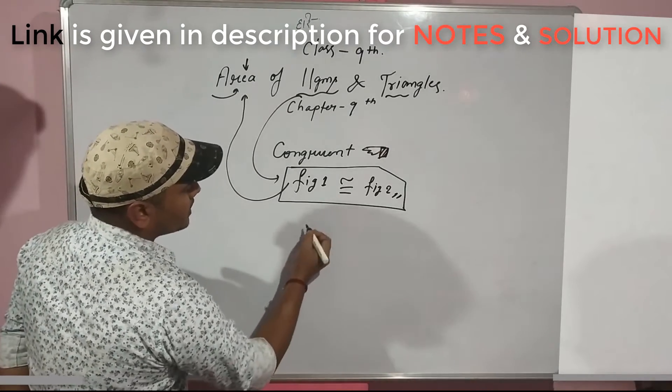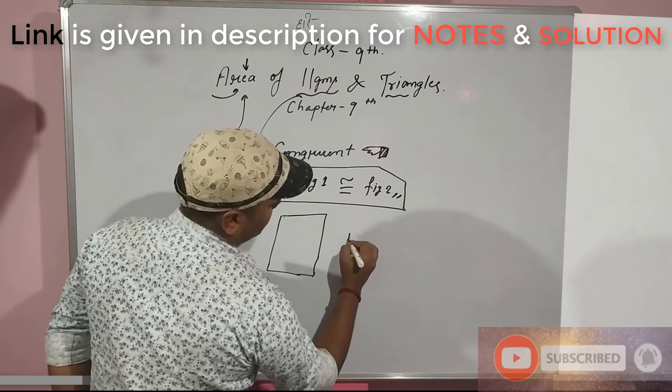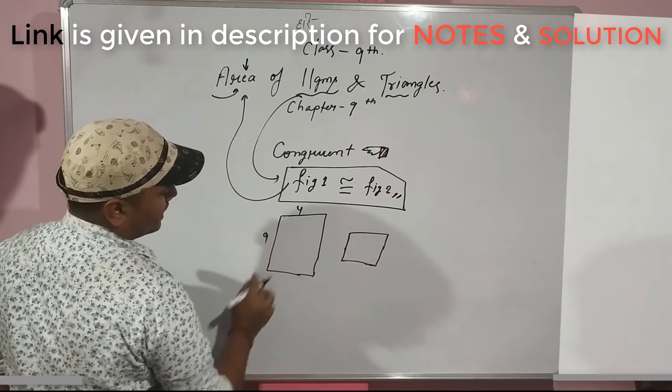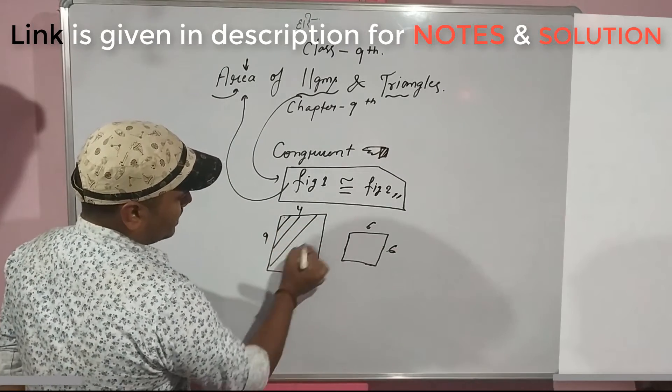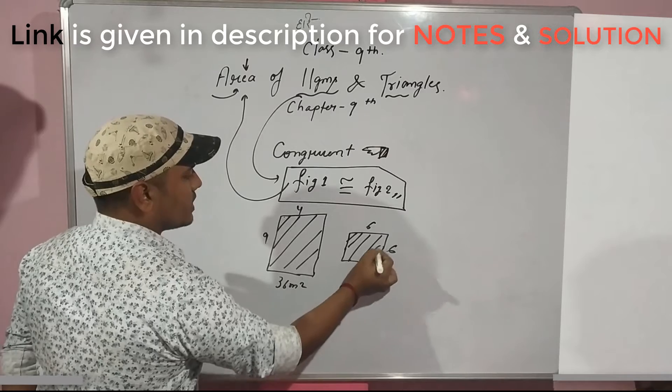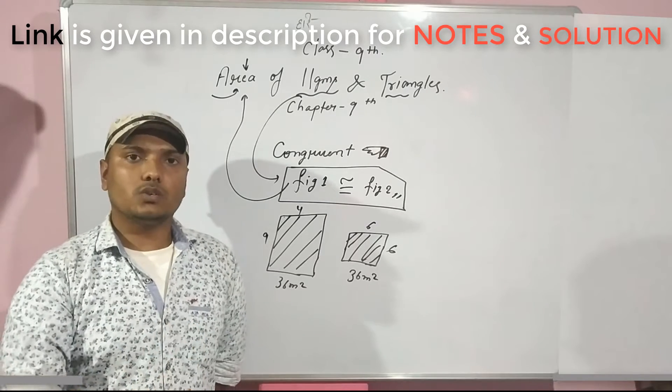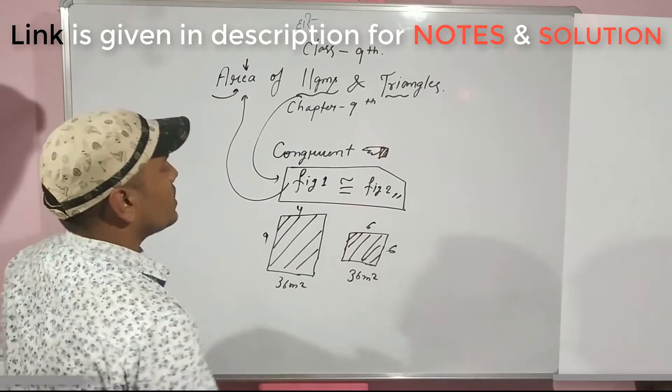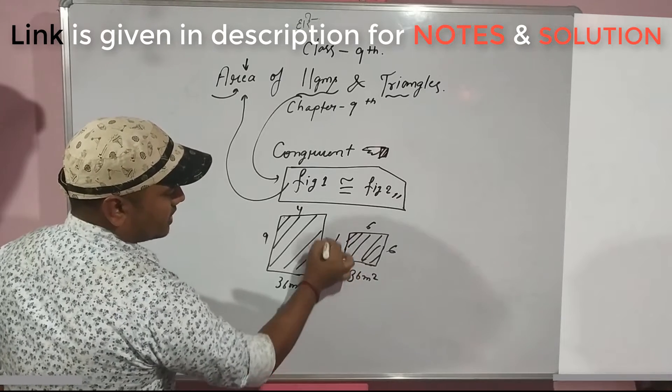We have two figures. One rectangle is 4 by 9, and another is 6 by 6. If we calculate this area, it is 36 square meters. If we calculate this area, it is also 36 square meters. The two figures have equal areas, but they are not congruent.